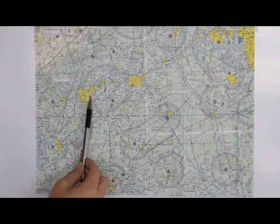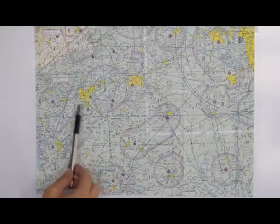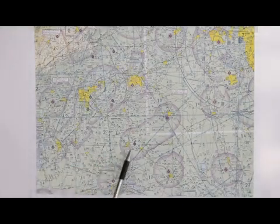Notice that the Greenville downtown airport is denoted in blue. Blue means there's a control tower, versus magenta, there is no control tower.